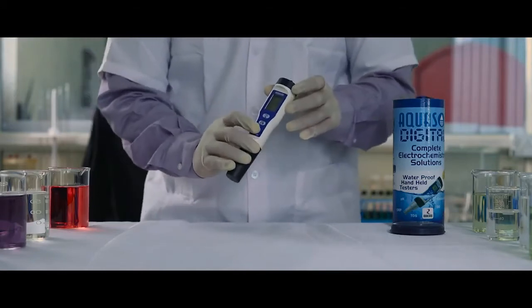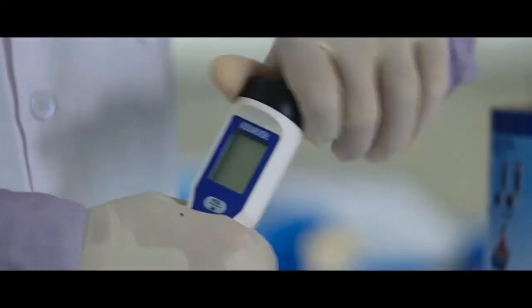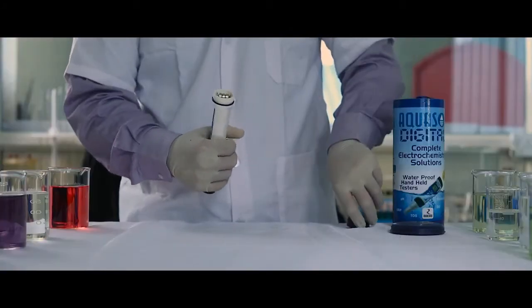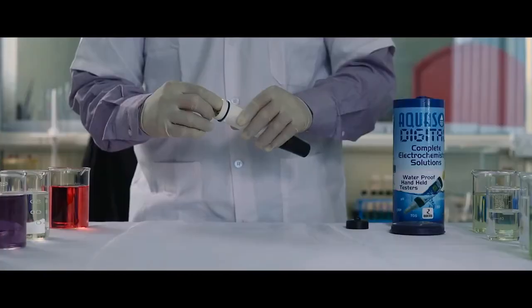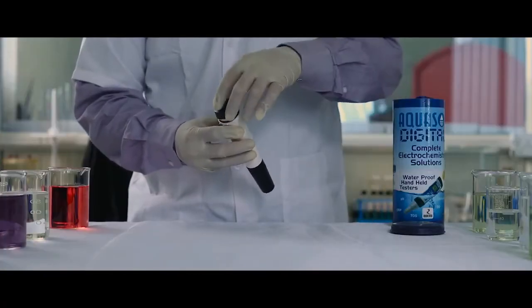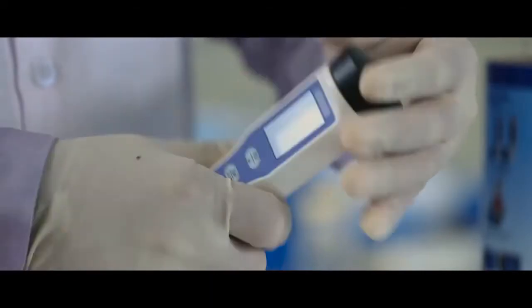To replace the batteries, switch off the meter and unscrew the battery cap on top of the device. Note the polarities and replace the batteries. Screw back the battery cap.